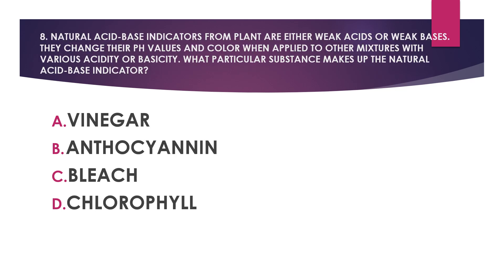Number eight: Natural acid-base indicators from plants are either weak acids or weak bases. They change their pH values and color when applied to other mixtures with various acidity or basicity. What particular substance makes up the natural acid-base indicator? A) Vinegar, B) Anthocyanin, C) Bleach, D) Chlorophyll.